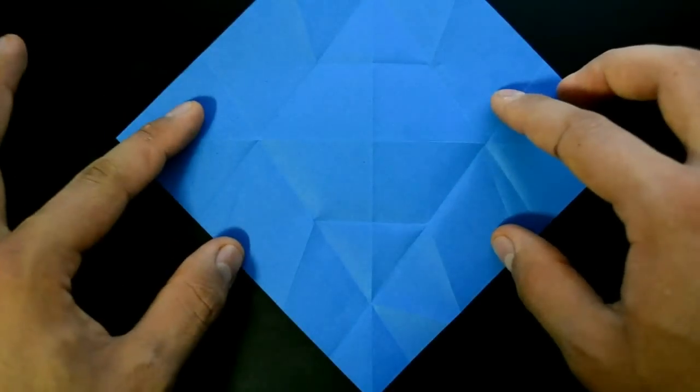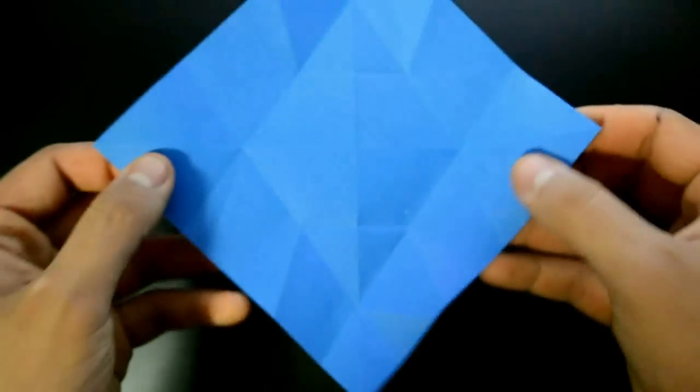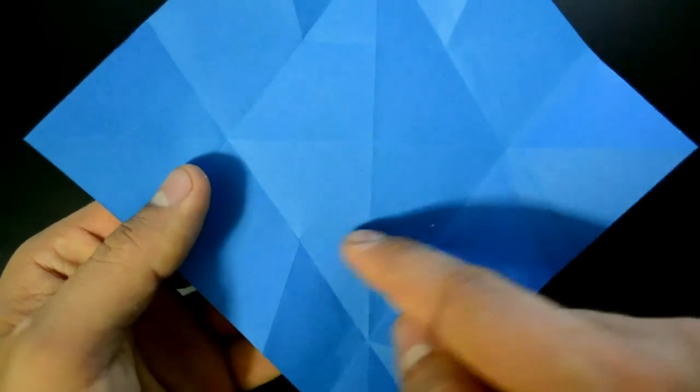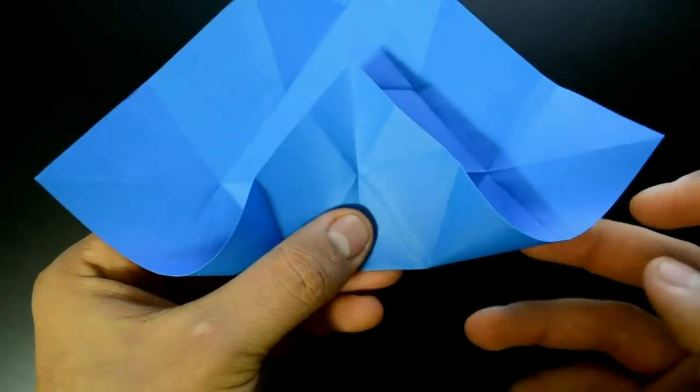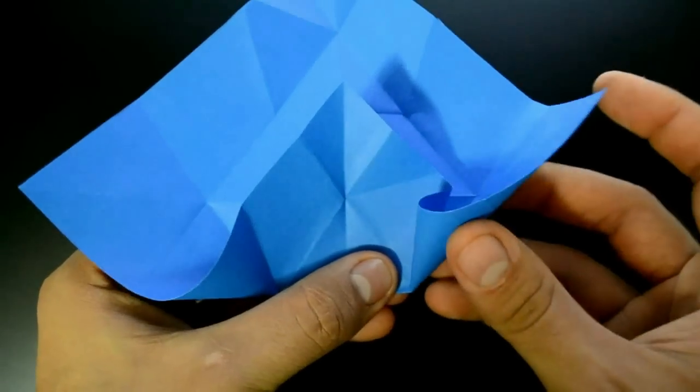Using these creases, we first need to fold up the bottom corner in this line and close the right side over it, like that.